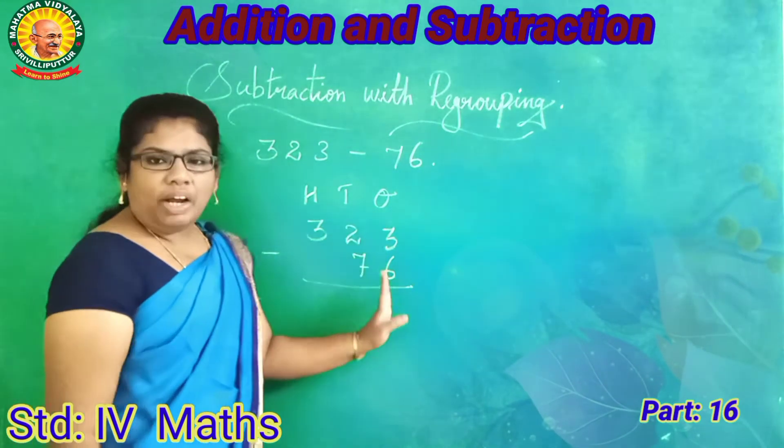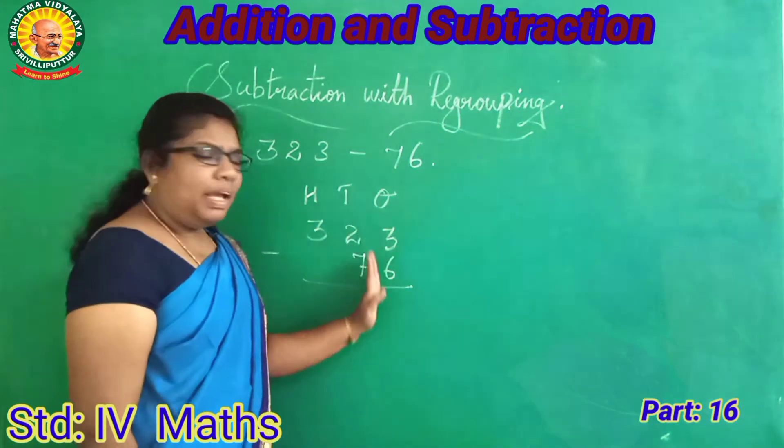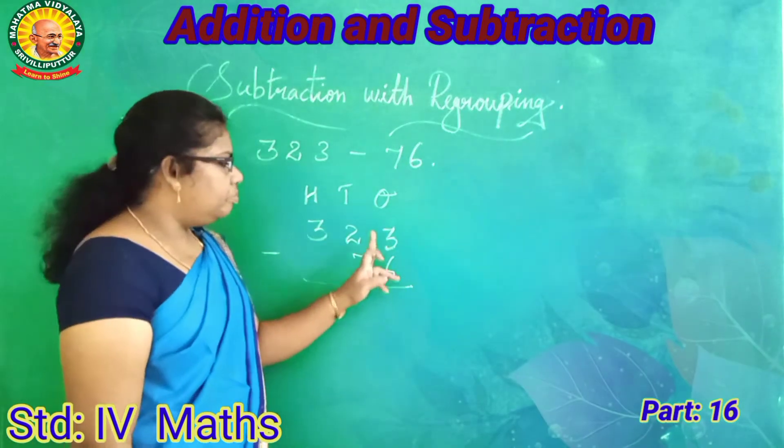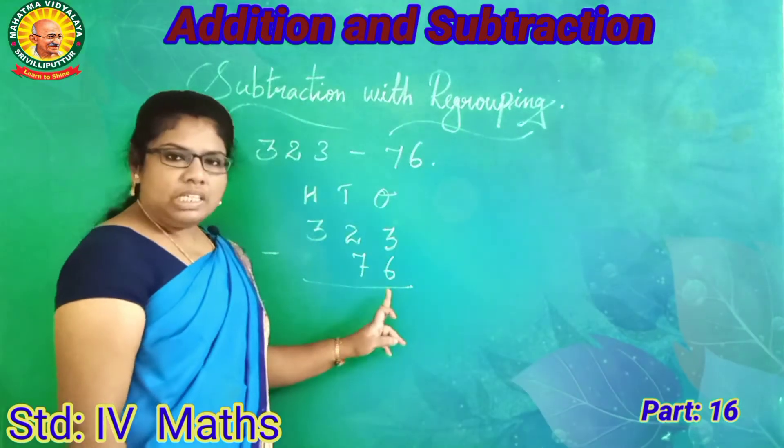I start from the ones place. The ones place: 3 on top, 6 on the bottom.